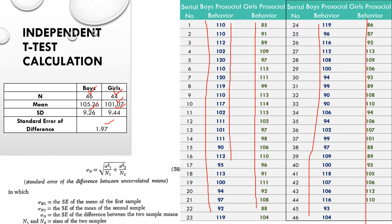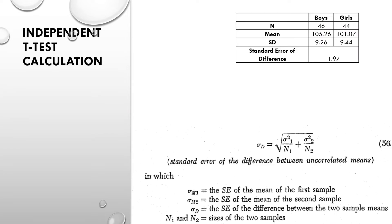For the standard error of difference, we already have the standard deviation values. The formula is: take the square of the standard deviation of group 1 divided by n1, plus the square of the standard deviation of group 2 divided by n2, and take the square root of the entire thing. That gives us the standard error of difference.